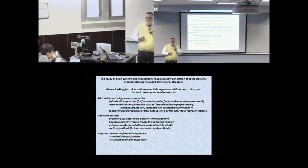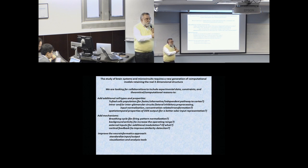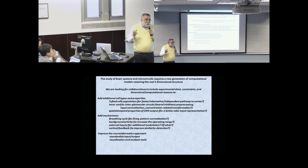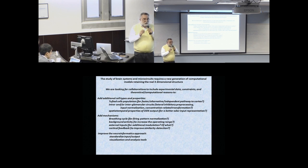The challenges ahead are that we need good experimentalists to tell us important mechanisms to include — PG cells and local glomerular mechanisms are definitely among them. We need specific information. It is not enough to say we have theta and gamma rhythms. If we take all published experimental papers on any given mechanism, we get contradictory results. We need clear experimental indications — not necessarily consensus, but something we can safely include to ensure our model reproduces crucial experimental data so it can be used for validation and to predict new experiments.